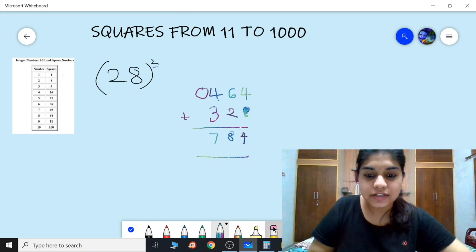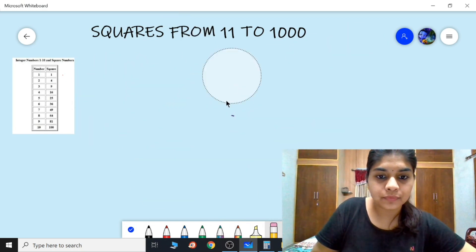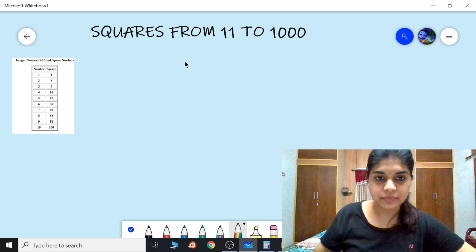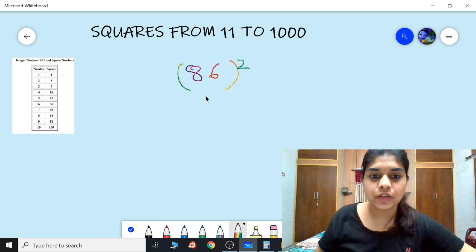Simple right? So let's take another example. Now I'm taking another two-digit number, 86 for example.